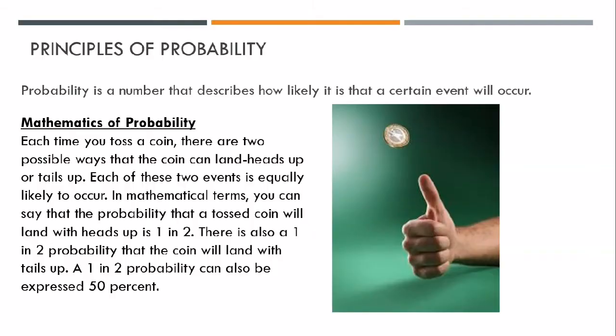Probability is a number that describes how likely it is that a certain event will occur. Each time you toss a coin, there are two possible ways that the coin can land: heads up or tails up. Each of these two events is equally likely to occur. In mathematical terms, the probability that a tossed coin will land with heads up is 1 in 2. There is also a 1 in 2 probability that the coin will land with tails up, which can also be expressed as 50%.